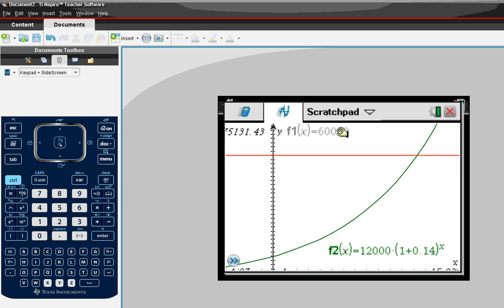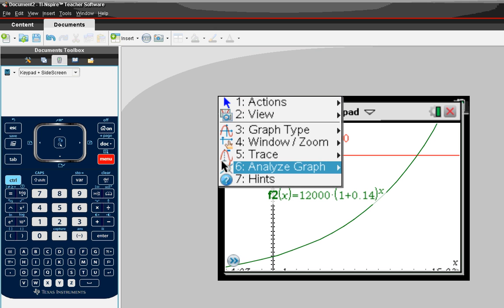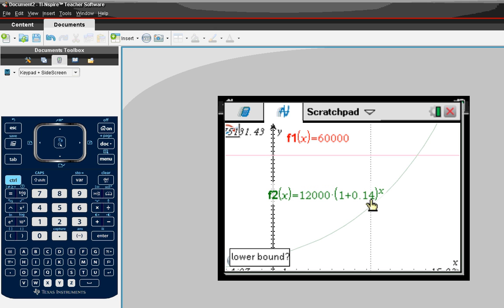Okay, so my red line there is at 60,000, and the green line is my other function. So now I will look for the intersection by going to menu, analyze graph, intersection. Lower bound, I'll click on the left. And I see the lower bound at the bottom part of the screen there.